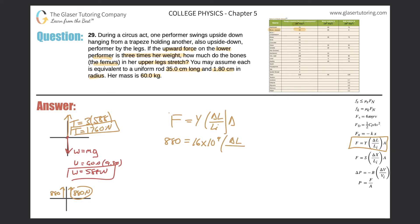The change in length is what we're after because we're looking for how much do the upper leg stretch by. And now what we are looking for, the initial length of the femur. It's said to, you may assume, each is equivalent to a uniform rod of 35 centimeters long. So here we have, we got to convert that into meters. So just move the decimal place two places to the left. That's great.